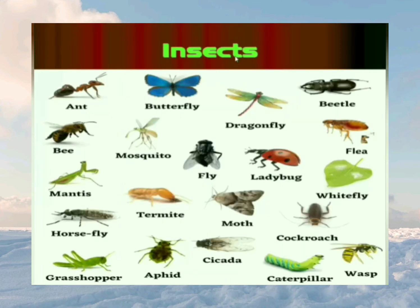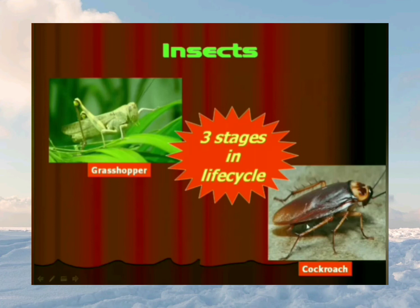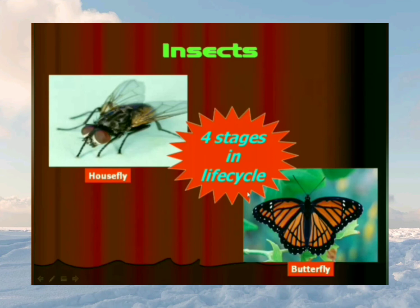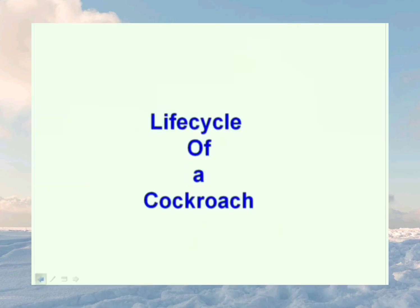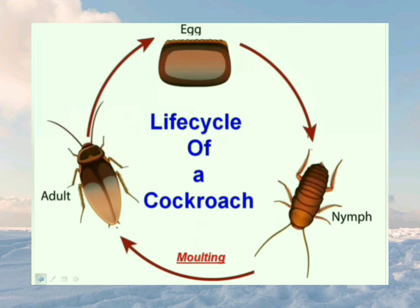Now let's see how insects reproduce. All insects develop from eggs. Some insects like grasshopper and cockroach have three stages in their life cycle. The three stages in the life cycle of a cockroach are egg, nymph, and adult. The nymph is the baby cockroach that hatches from the egg and does not have wings. As it grows, the old skin is shed off and a new one grows — this is called molting. So molting means shedding off the old skin.